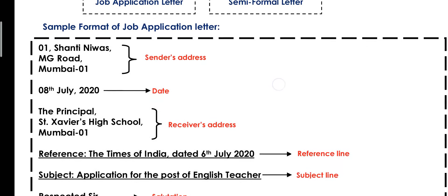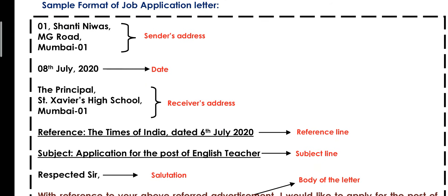First of all, we have taken a format here so that I can explain how to write a job application letter. The start of the letter will always be from the sender's address. The sender's address is generally given in the question, so if it is given, we will write that address. Otherwise, we can write a random address — for example, 01, Shanti Nivaas, MG Road, Mumbai 01. In 99% of cases in the question paper, the address is given in the sender's address section of the job application format, so we can take it from there.